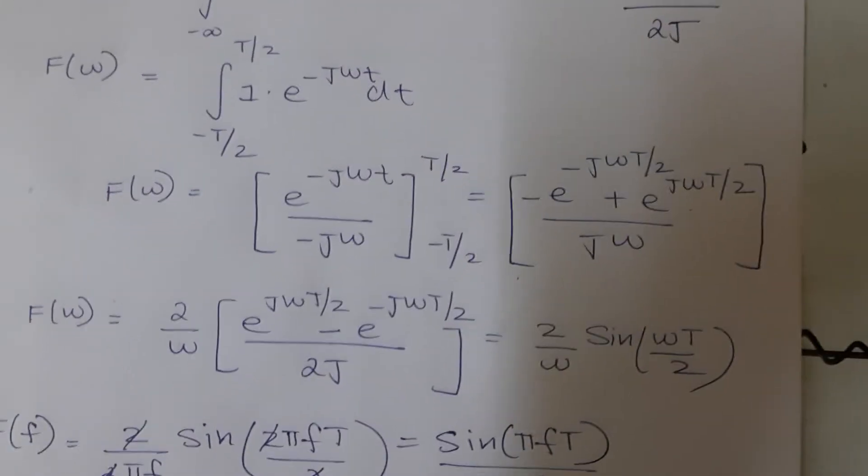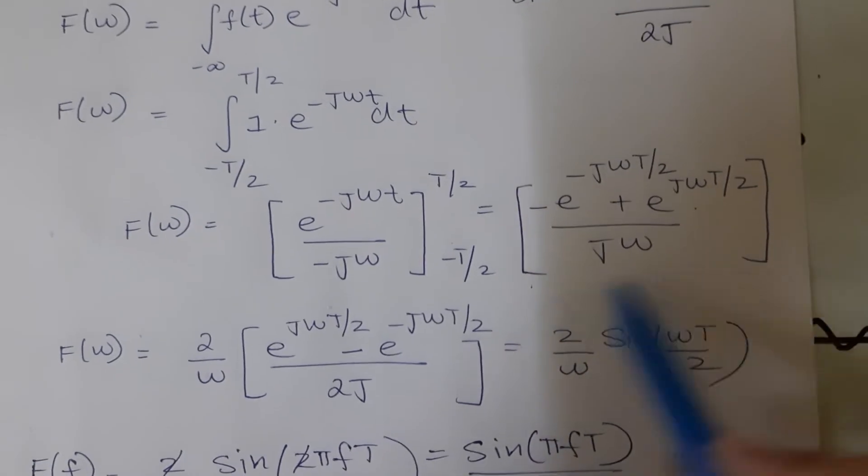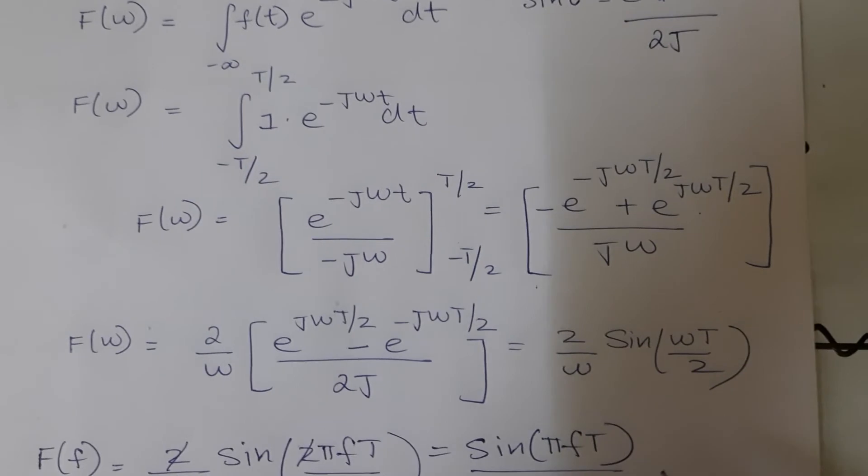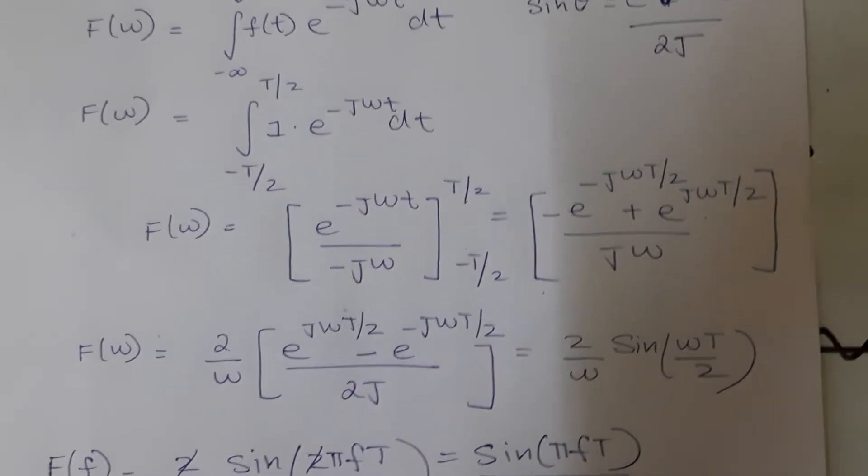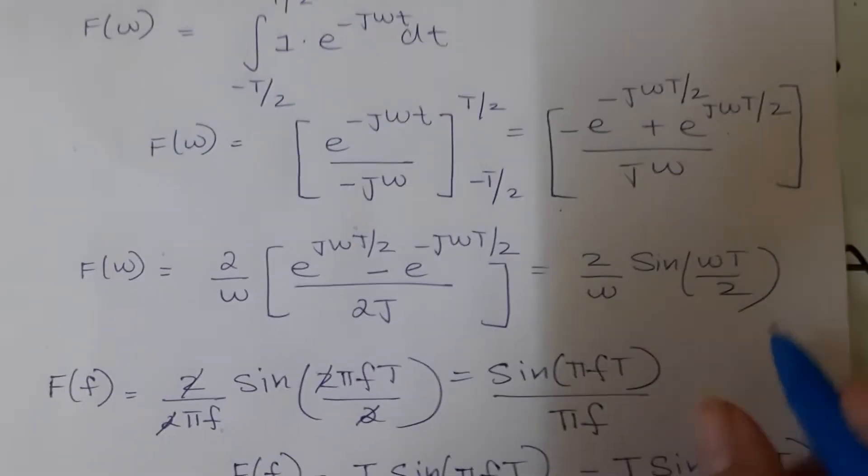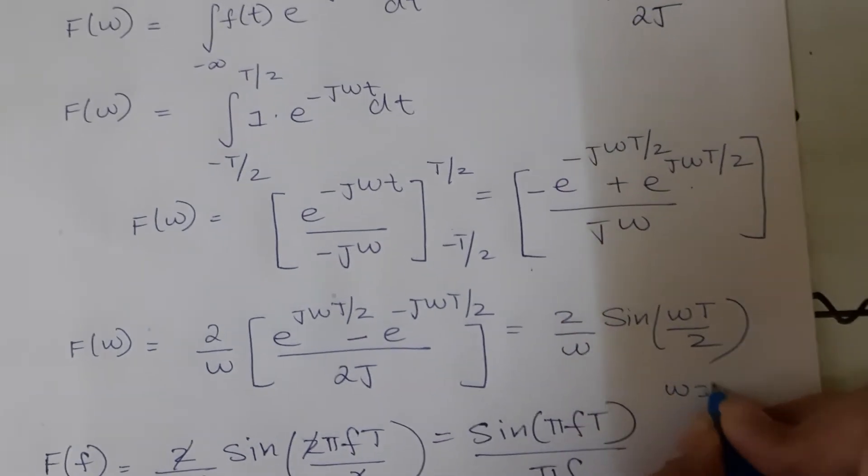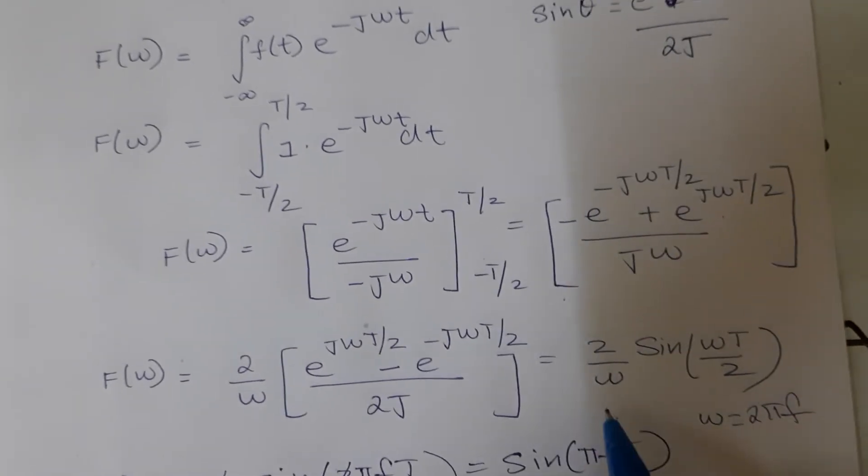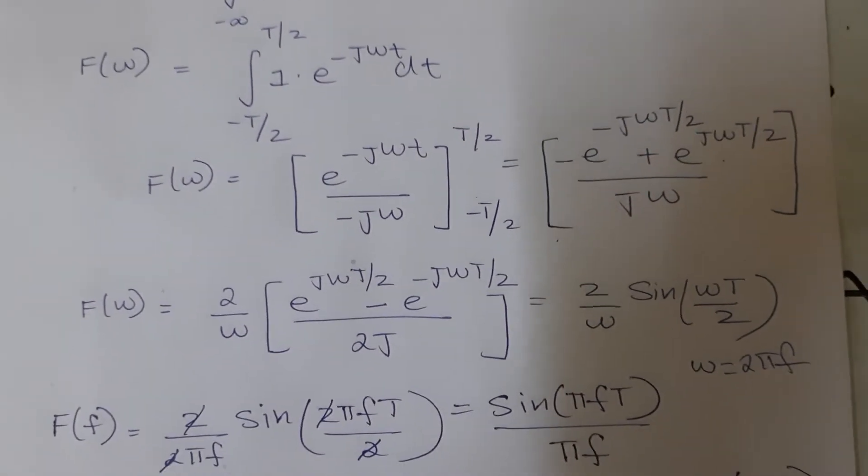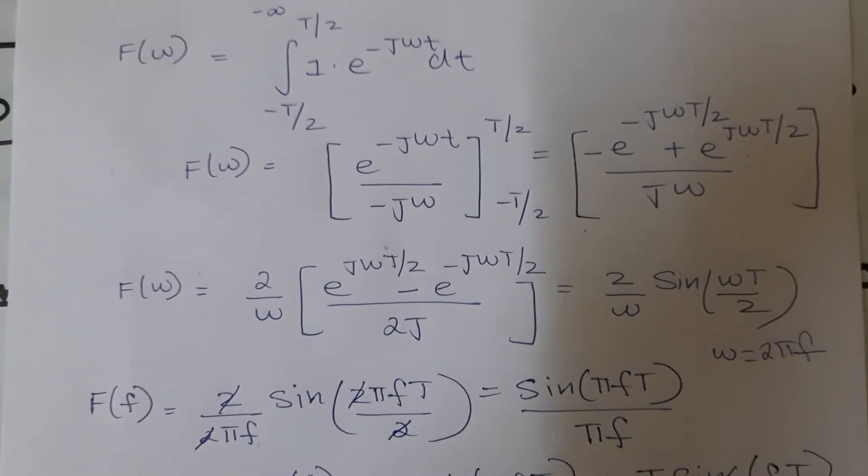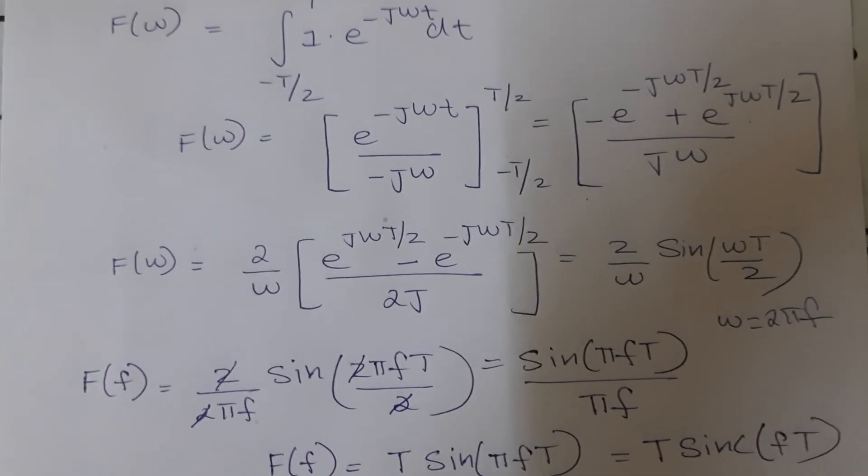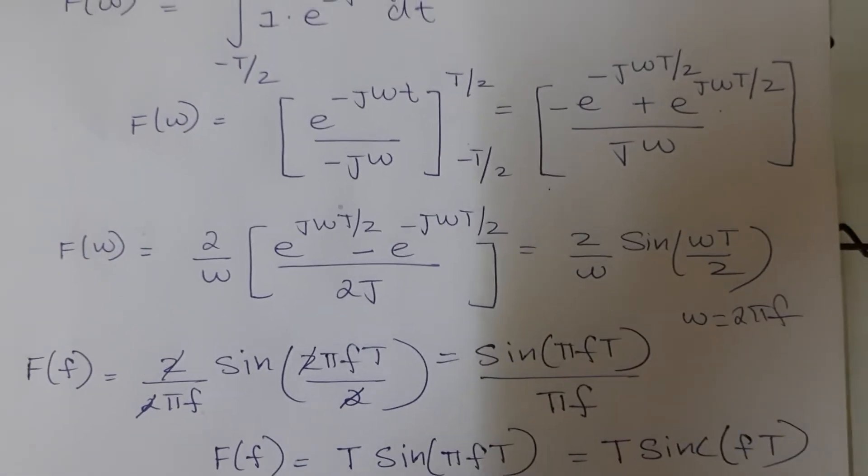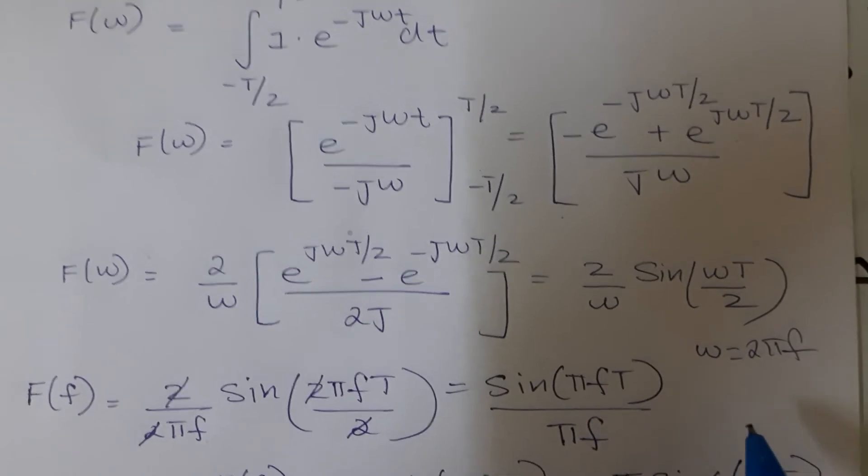Now the main challenge is to convert this into a sinc function. To do that I will convert omega into frequency. Omega is equal to 2 pi f. So let me substitute 2 pi f everywhere instead of omega. I will get 2 by 2 pi f sine 2 pi f tau by 2. The 2s will cancel and this becomes sine pi f tau by pi f.